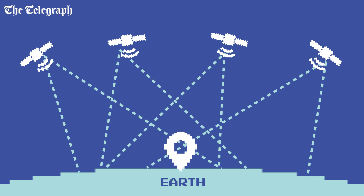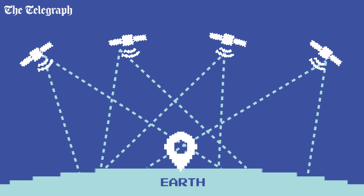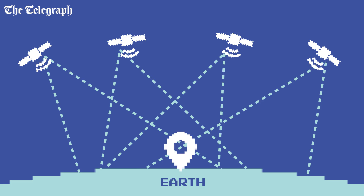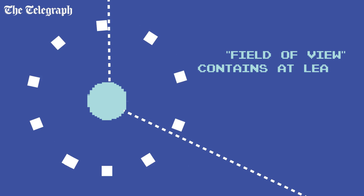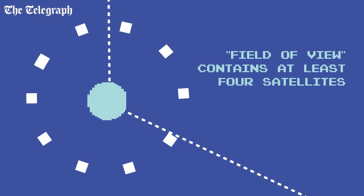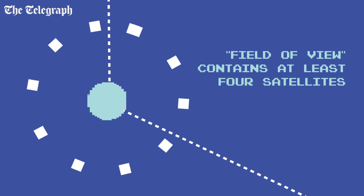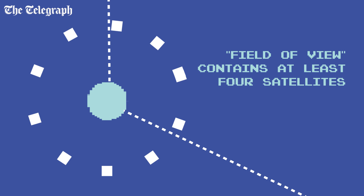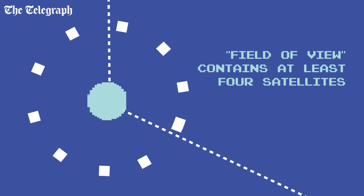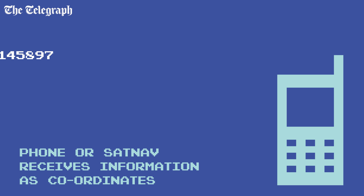Technically, a minimum of four satellites are required to determine your location accurately. Because of the way satellite orbits are coordinated, your GPS unit should be able to see between four and eight satellites at any one time.